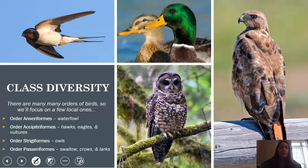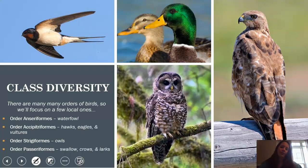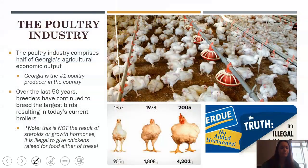In terms of class diversity, there are lots of orders of birds, but we're going to focus on four local ones you may have seen. Anseriformes are your waterfowl. Accipitriformes are your hawks, eagles, and vultures. Strigiformes are your owls. And Passeriformes are like your songbirds, swallows, crows, and larks.